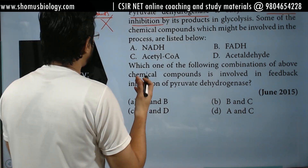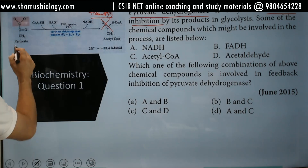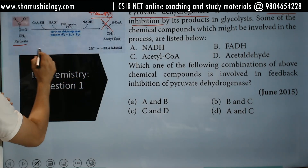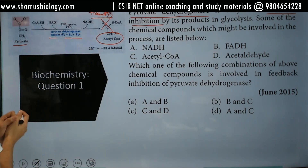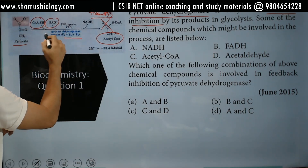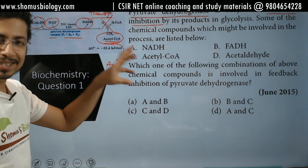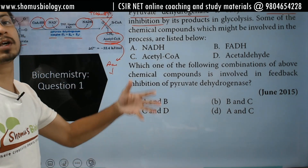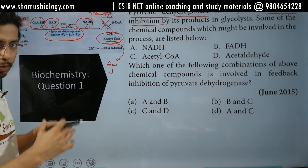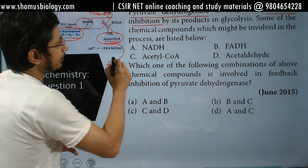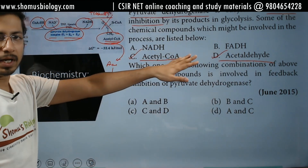So what are the products of pyruvate dehydrogenase? That is what you need to figure out. In this reaction, pyruvate is converted into acetyl-CoA by the dehydrogenase complex, where coenzyme A and NAD+ are involved and NADH is produced as a result. So acetyl-CoA and NADH are the products — the hardcore products of this reaction. They are going to inhibit the pyruvate dehydrogenase complex. So among the options, acetyl-CoA and NADH both can inhibit, but the rest will not inhibit.